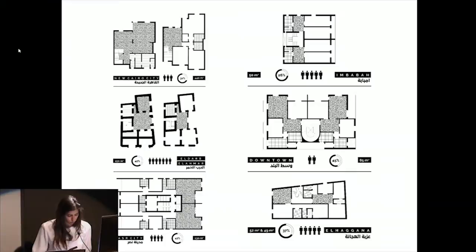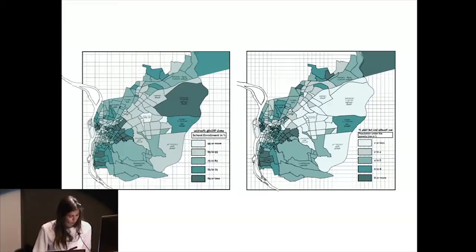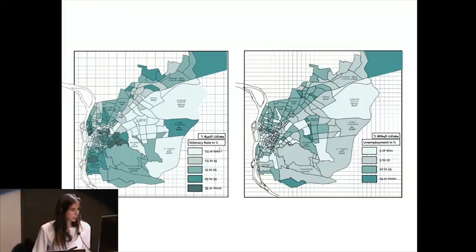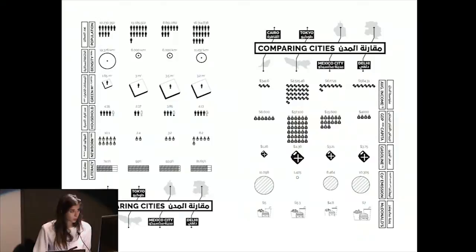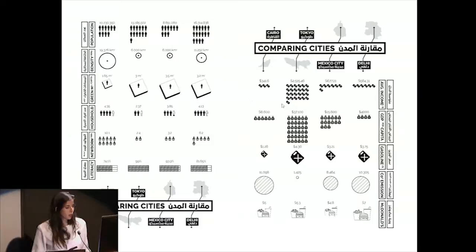We also wanted to show, using GIS tools, the discrepancies among neighborhoods in broader socioeconomic terms, including school enrollment by percentage, population under the poverty line, illiteracy rates, and employment rates per neighborhood. We also compared Cairo to other cities — comparing population, density, and green space per capita. The cities we compared to were Tokyo, because this work was initially shown in an exhibition from Tokyo entitled 'Struggling Cities,' showing Tokyo post-World War II struggling with growth and reconstruction.